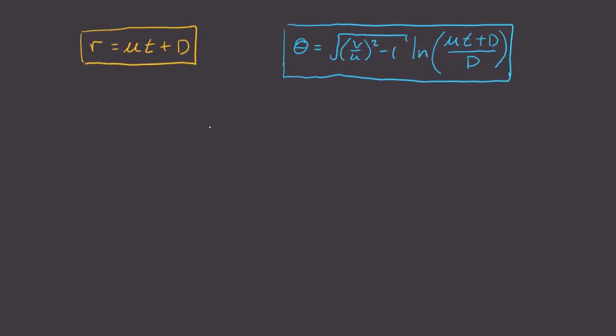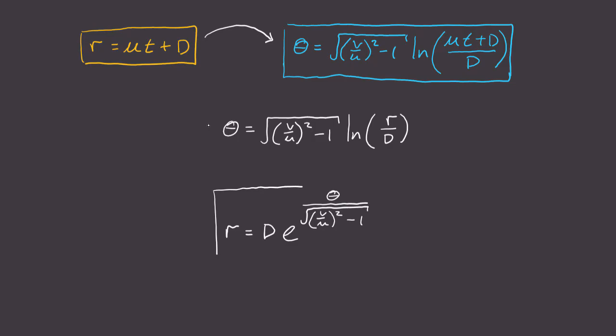But now we've got two parametric equations. We need to get rid of time to get an expression for our spiral. So let's substitute r in the theta equation. Now divide by the square root term and exponentiate both sides. The result: r is equal to D e to the theta divided by the square root of v squared minus u squared minus one, is the equation of our spiral.